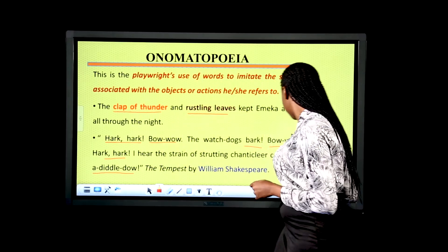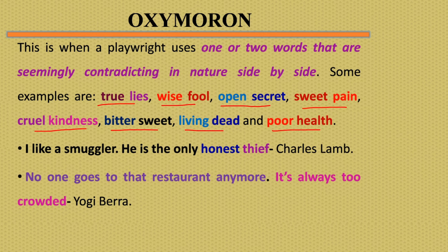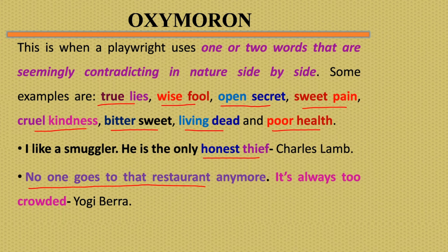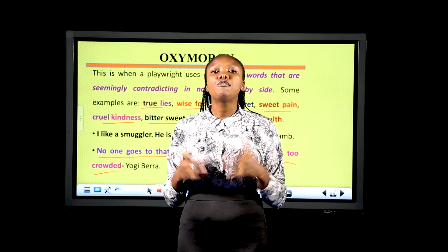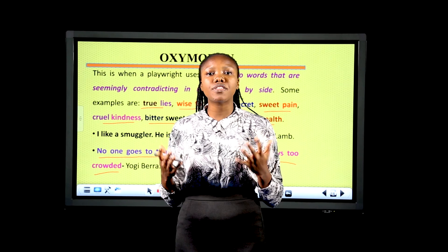Oxymoron is when a playwright uses two contrasting words side by side. Some examples are: true lies, wise fool, open secrets, sweet pain, cruel kindness, bittersweet, living dead, and poor health. Oxymoron can also appear in sentences: 'He is the only honest thief.' 'No one goes to that restaurant anymore — it's always too crowded.' We see the playwright makes use of words that are seemingly contradicting each other side by side.